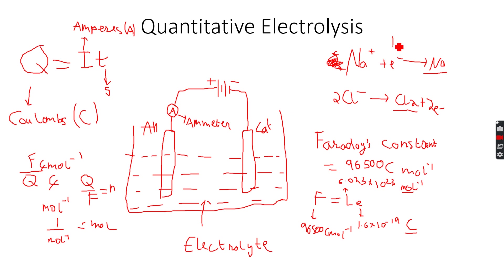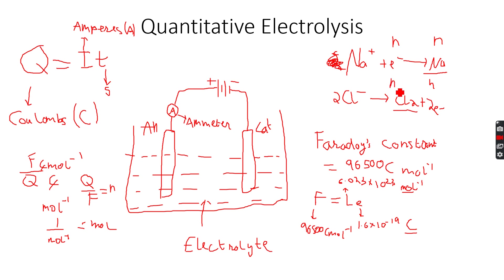Now that I have the number of moles of electrons, I can look at the half equations to find the moles of sodium or chlorine. For sodium, the moles of sodium also equals n, because there is a 1:1 ratio of electrons to sodium. For chlorine gas, if the moles of electrons is n, then the moles of chlorine gas is n/2, because there is a 2:1 ratio of electrons to chlorine.